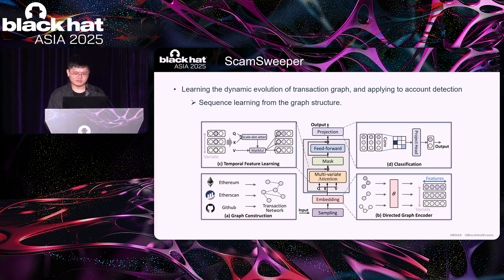Thus, to capture the dynamic evolution feature and handle large-scale transactions, we propose the Scam Sweeper. The main idea is combining sequence and graph methods, learning sequential features from the graph network. The framework contains four parts: first, we collect data from EtherScan, Ethereum, and GitHub to construct a transaction network with accounts as nodes and transactions as edges. Second, we use a sampling method to simplify the network and split the graph into subgraphs according to temporal series. Then a graph method learns each subgraph feature constructing a feature matrix. Finally, we use a simple classification method.